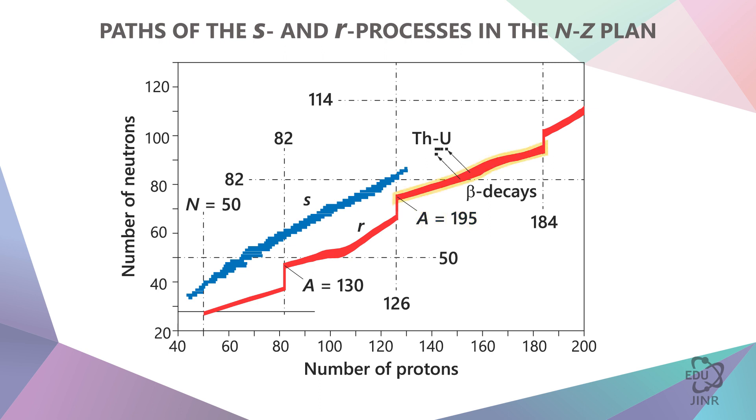This rapid neutron capture process is also called the R process. It takes place once again, and when we reach the very heavy isotope of lead 238, then beta decay begins, which leads us to uranium. The parent of uranium in the R process is lead 238.